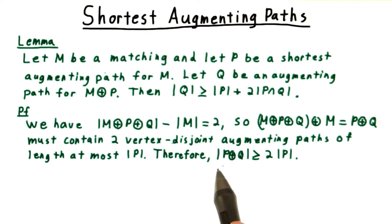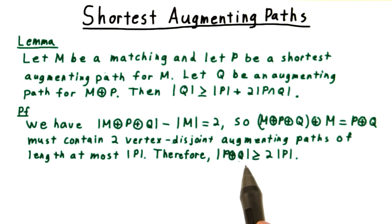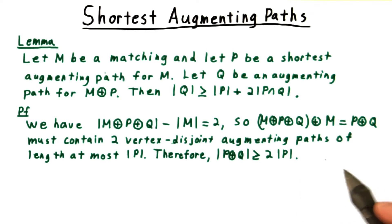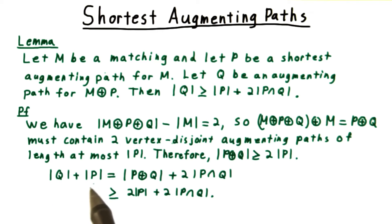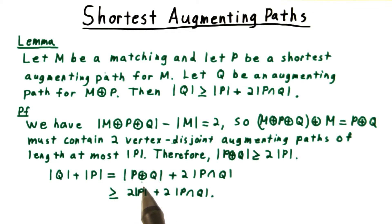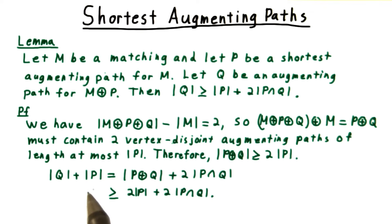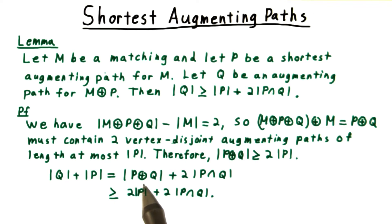Therefore, the total number of edges in the symmetric difference between p and q is at least twice the size of p. Now, the size of q plus the size of p is the size of what is in exactly one of the two plus twice the size of what is in both. You can think about the overlap being counted once in p and once in q, but not at all in the symmetric difference.